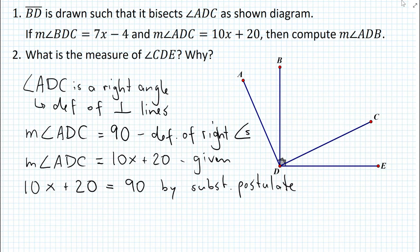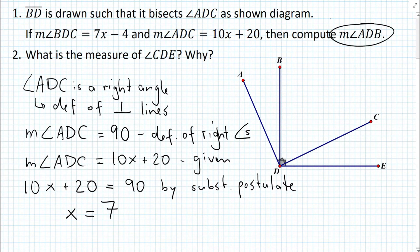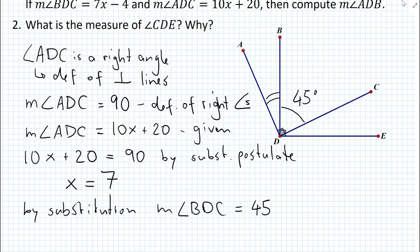Now, all we need to do is solve for x. We know that x is equal to 7 — we subtract and then divide, using the subtraction postulate and then the division postulate. But in the problem, we're asked to find the measure of angle ADB. If we find the measure of angle BDC first, because it's given in terms of x, we can find the measure of angle ADB by subtracting the measure of angle BDC from 90 degrees. By substituting x equal to 7 into 7x minus 4, we obtain the measure of angle BDC to be 45.